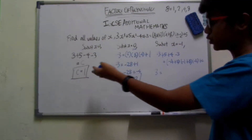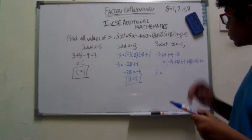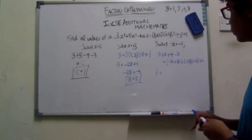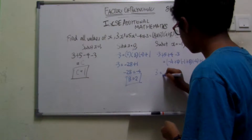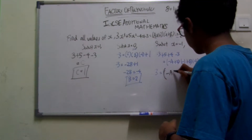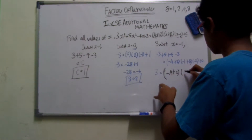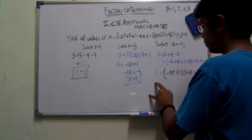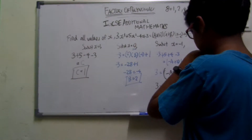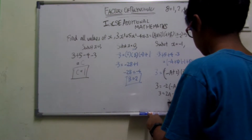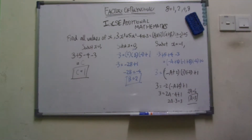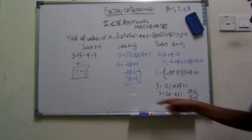By substituting x equals 1 into both sides, we already got c equals 1. From substituting x equals 0, I got b equals 2. Now substituting x equals negative 1: negative 3 plus 5 plus 4 minus 3 equals negative a plus 2 times negative 1 plus b times negative 2 plus c. Substituting all known values and simplifying, we get 2a equals 6, so a equals 3. Therefore a equals 3, b equals 2, and c equals 1.